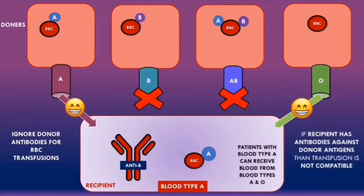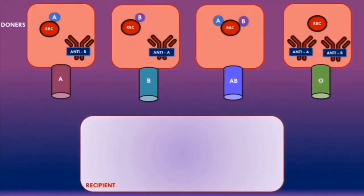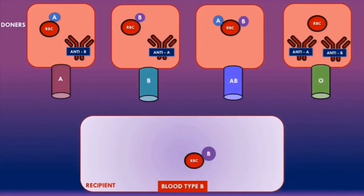If you understood everything so far, then understanding ABO compatibility for the remaining blood groups should be straightforward. For a recipient with blood type B, the recipient has red blood cells with B antigens and anti-A antibodies in the plasma.